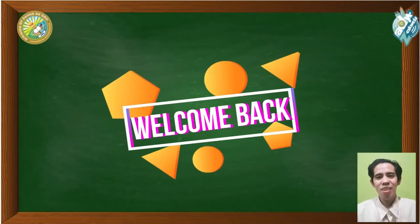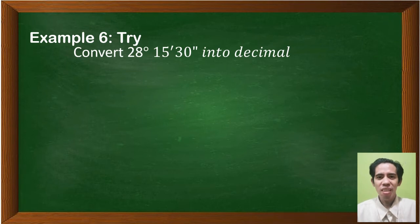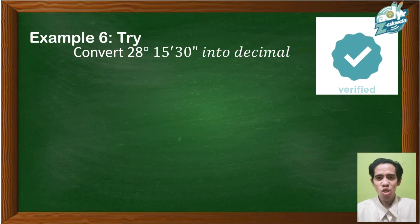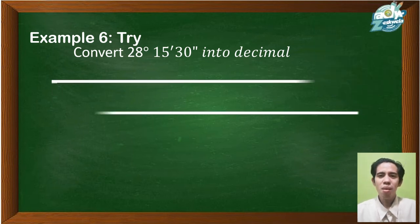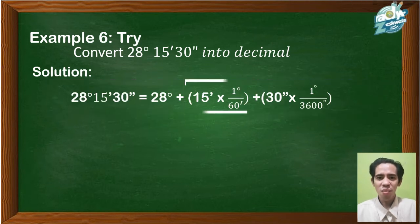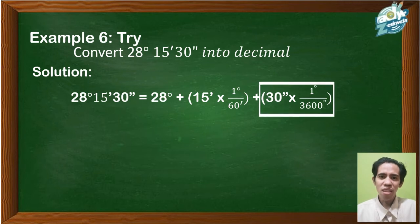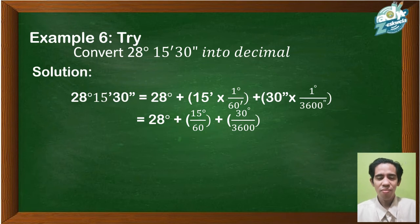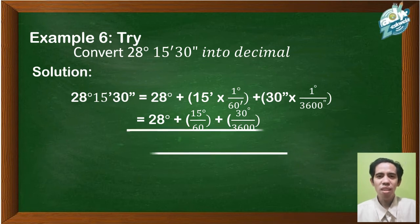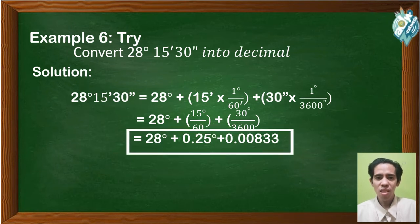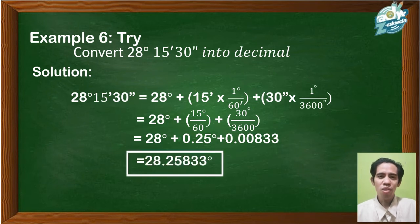Welcome back. Convert 28 degrees, 15 minutes, and 30 seconds into decimal. Let's check your answer: 28 degrees plus 15 minutes times one degree over 60 minutes, plus 30 seconds times one degree over 3600. That gives 28 degrees plus 0.25 degrees plus 0.00833 degrees. The sum is 28.25833 degrees. Very good — I know you're right.